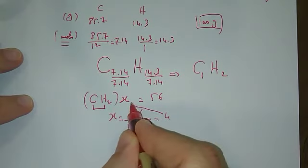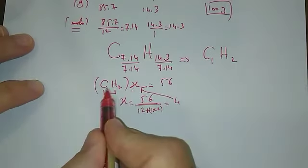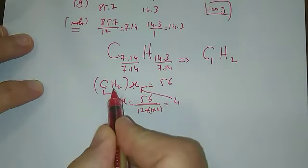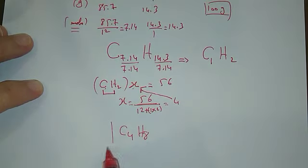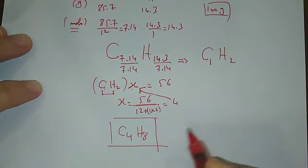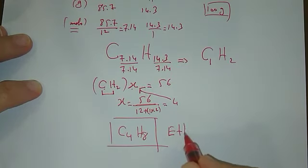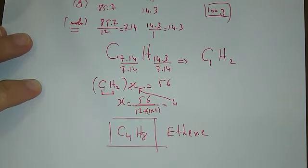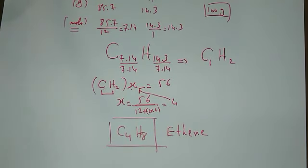Then I take 4 and substitute here for C4 and 2 times 4 is H8. So this is the molecular formula, and we know this compound exists in nature. It's called butene. You'll see it later on when you take your organic chemistry.